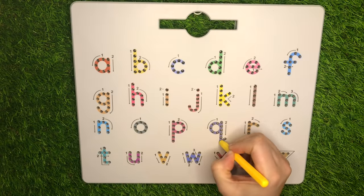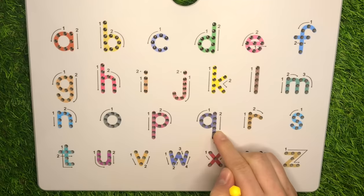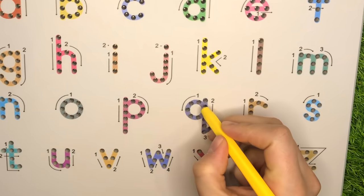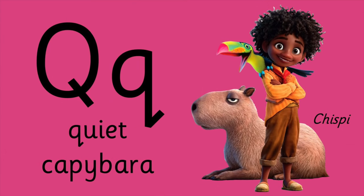Q is for Quiet capybara. Chisbee is Antonio's friend too.